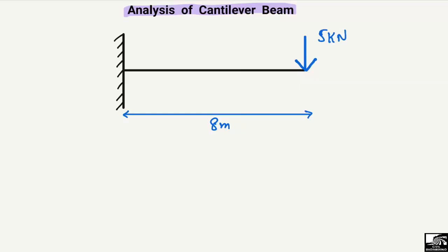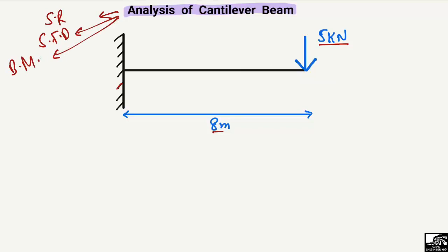I will do the analysis of a cantilever beam in very easy and quick steps, so just remember and follow these steps. Consider this cantilever beam with one end fixed and the other end free. There is a load of 5 kilonewton acting at the free end, and the total length of the beam is 8 meters. Analysis means to find out the support reactions, draw the shear force diagram, and draw the bending moment diagram.